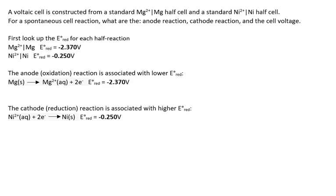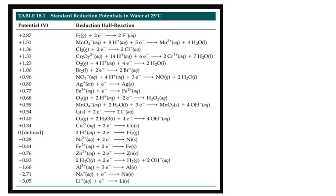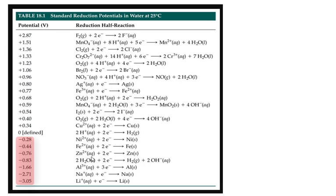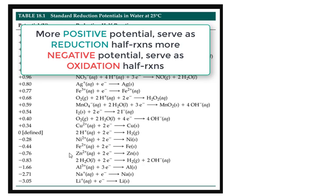You can look up these half-reactions in a table such as this one — this is an abbreviated list of some reduction half-reactions. Notice all of these half-reactions are written in their reduction form, where the reactants gain electrons. The potentials are associated with those reduction reactions. The more positive the voltage, the more spontaneous the reduction reaction. Negative E reduction potentials imply a non-spontaneous reduction, so those half-reactions are likely to be oxidation half-reactions. The lower the potential, the more likely the reaction will be an oxidation half-reaction.